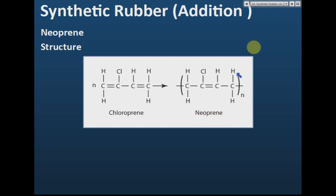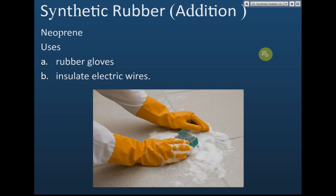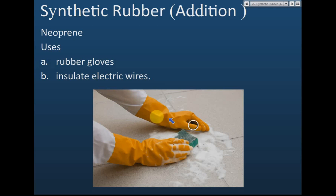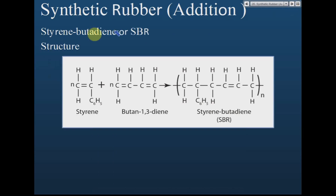Neoprene rubber is usually used to make rubber gloves. There are two types of rubber gloves: one is from natural rubber, which is more expensive and thinner — that's the glove used by doctors and surgeons. The other type is made from synthetic rubber — neoprene.